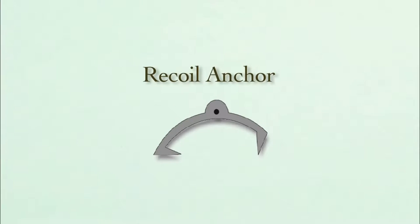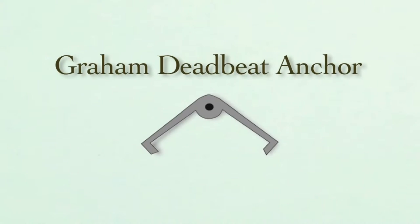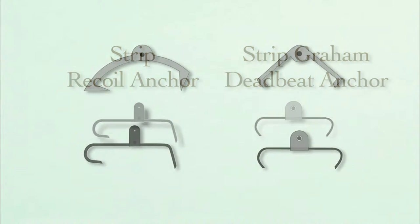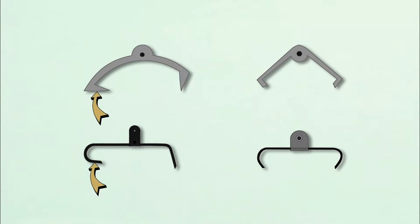Here is a recoil anchor and a Graham deadbeat anchor. And here is a strip version. Even though they look very different, the working surfaces or pallets would have the same angles, whether in full anchor form or strip form. American kitchen and mantle clocks most commonly have a strip recoil escapement, but many have a strip deadbeat.